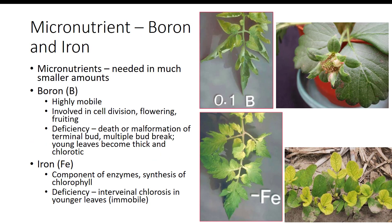Micronutrients are chemical elements that are essential for normal plant growth and development, but they are needed in much smaller amounts than macronutrients. Micronutrients that are essential for normal plant growth and development are iron, manganese, molybdenum, copper, boron, zinc, nickel, and chlorine. Boron is highly mobile in the plant and is involved in cell division, flowering, fruiting, and a variety of other physiological processes in plants. Deficiency symptoms are death or malformation of the terminal bud, which leads to multiple bud break. The young leaves on these shoots become thick and chlorotic.